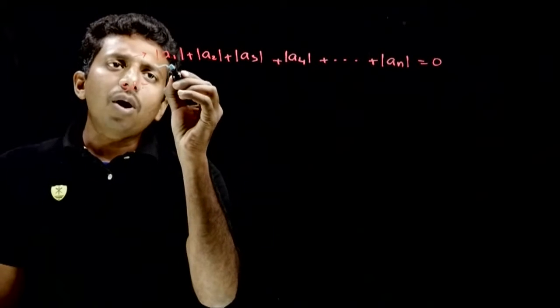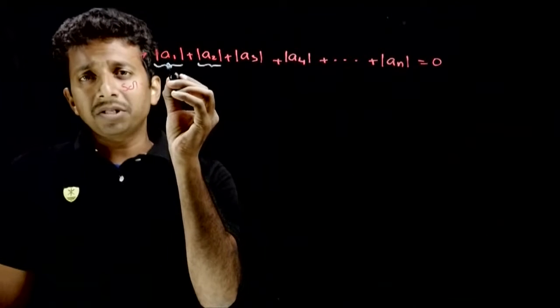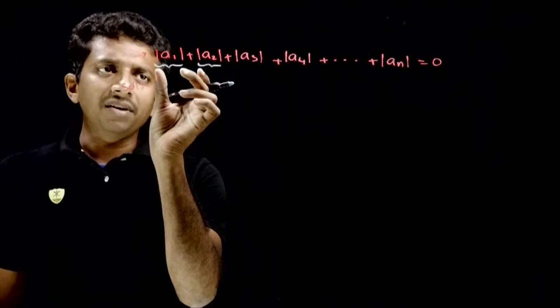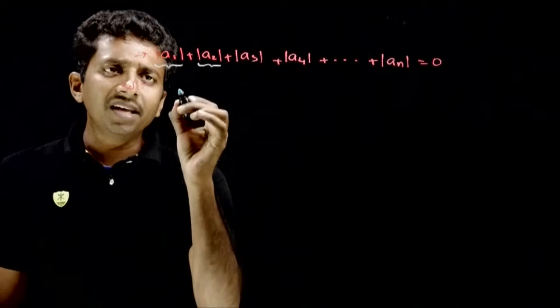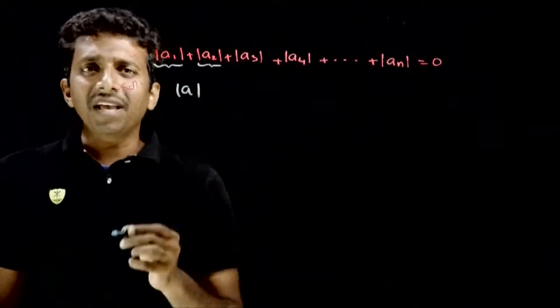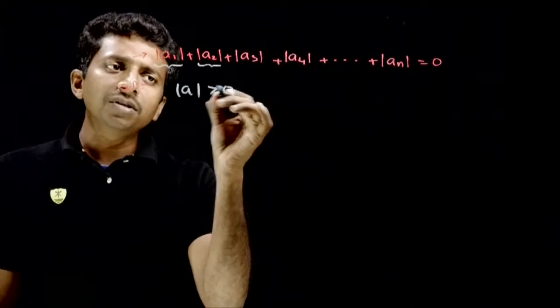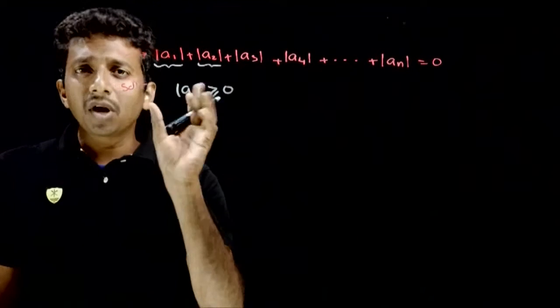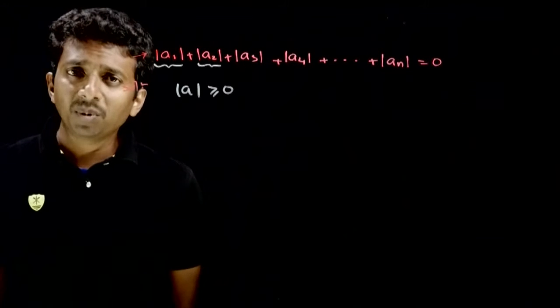We know that mod of something like a1, which can be positive or negative, the mod of a1 is always greater than or equal to 0. So the mod of something is always non-negative. The number itself can be negative.